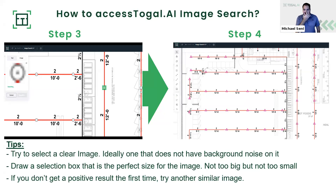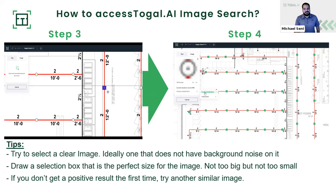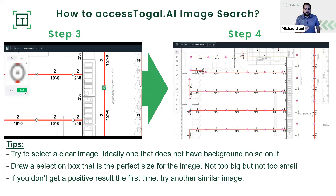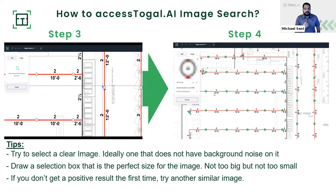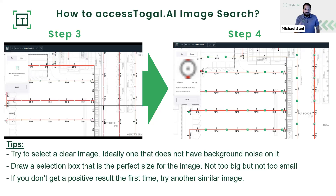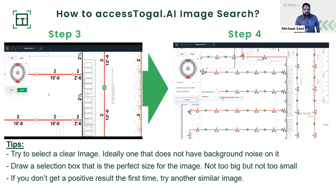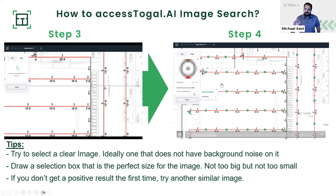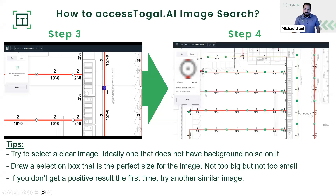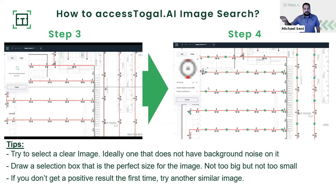If you happen to pick up background noise — say if you picked up text symbols — it would utilize that text as part of the initial image, giving you a non-ideal search result. Also, when drawing the selection box, you want to go for the perfect size for the image — not too big, not too small. Drawing a large excess box picks up too much background noise and will interrupt a perfect result. Draw a box that captures the actual object itself. Another quick tip: if you don't get a positive result the first time, just try another similar image. The AI will sometimes do better on a second image. After you click search, the AI will locate and tell you where your results are, and you can create a new classification or select an existing count classification to convert those counts.